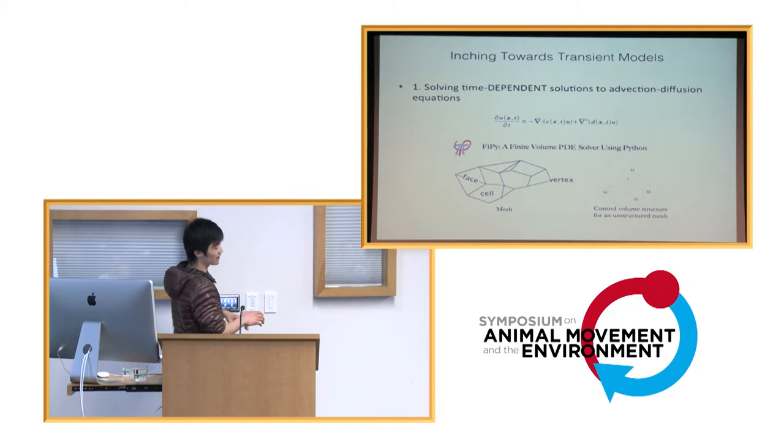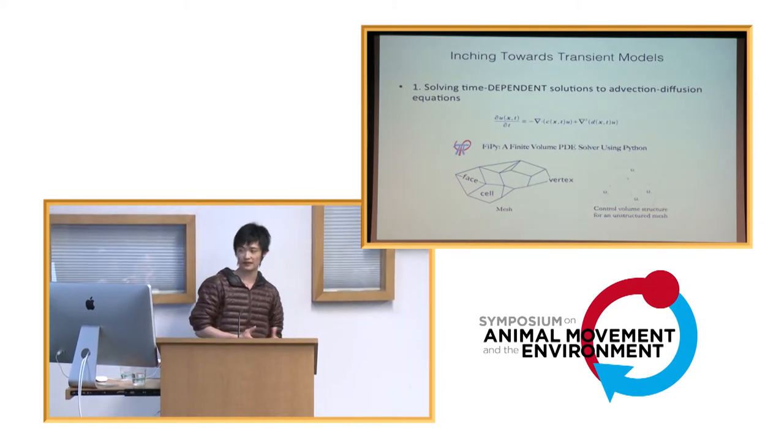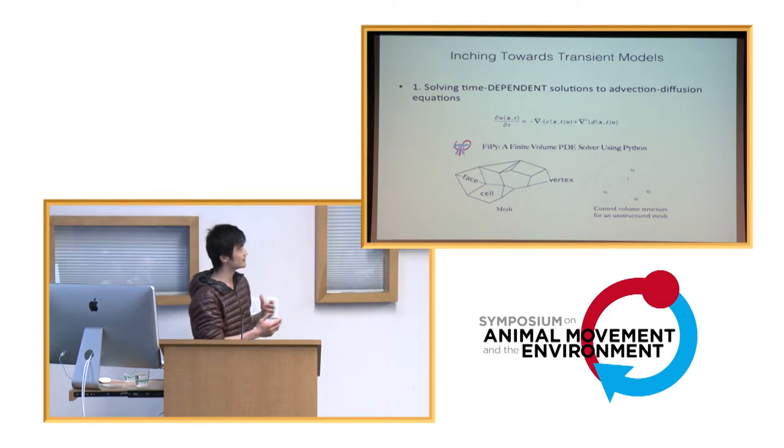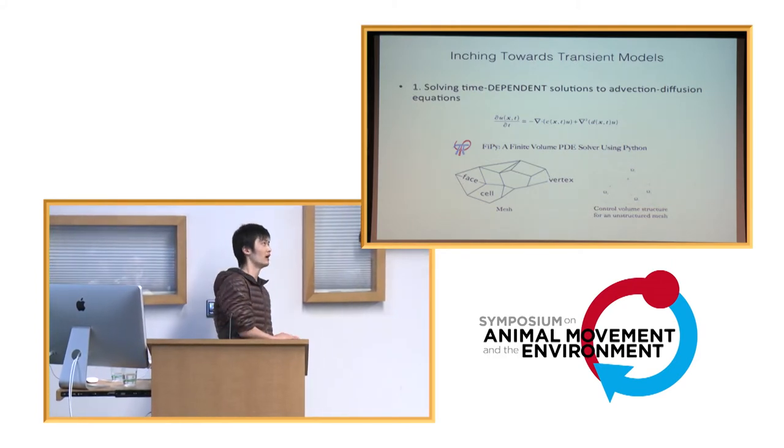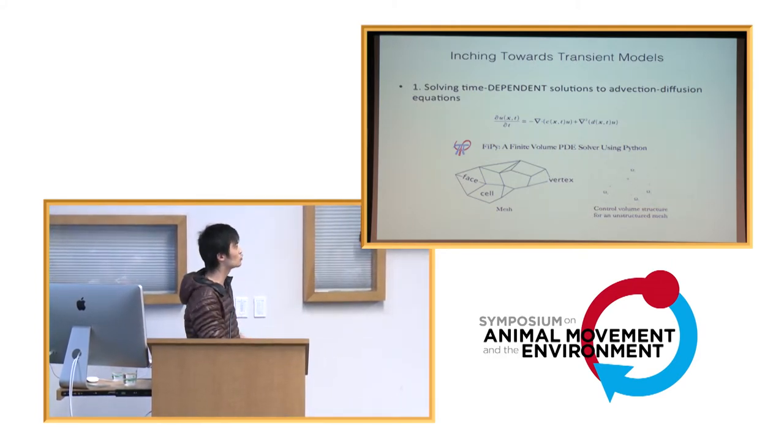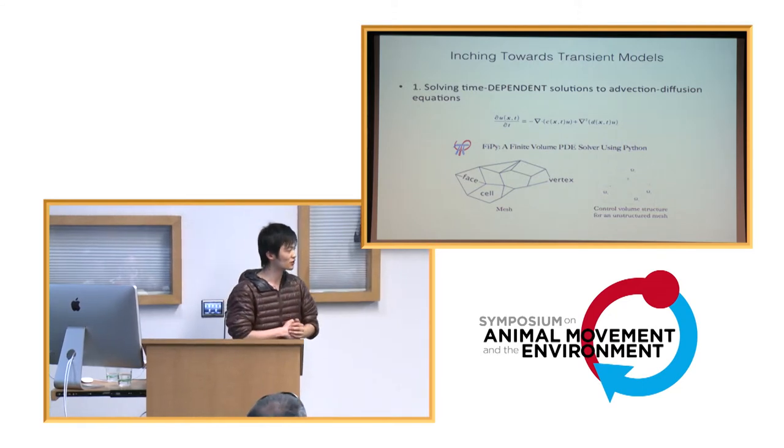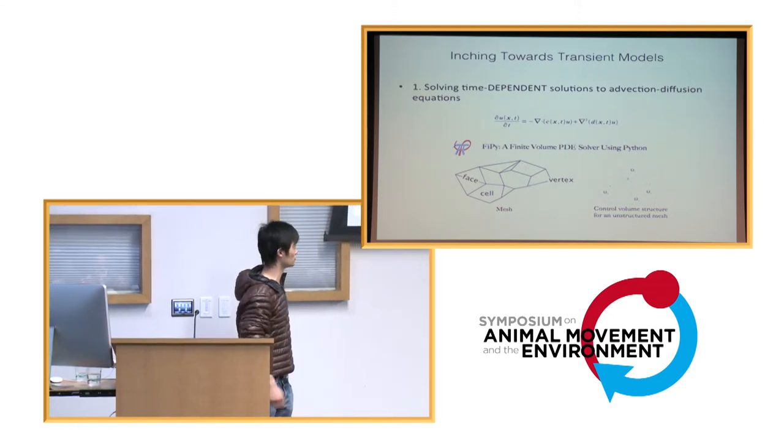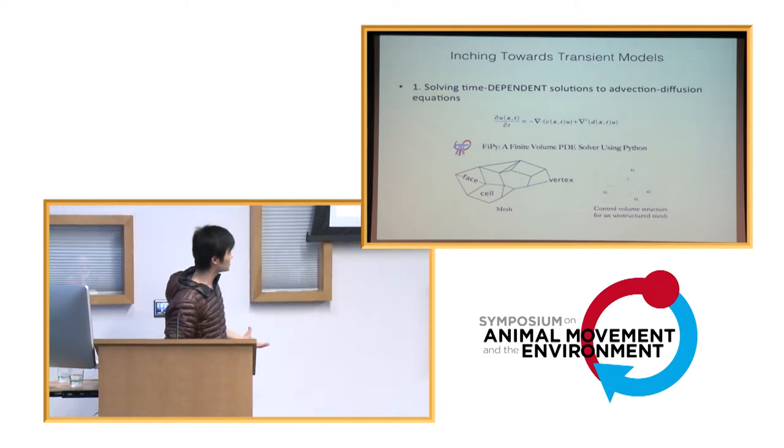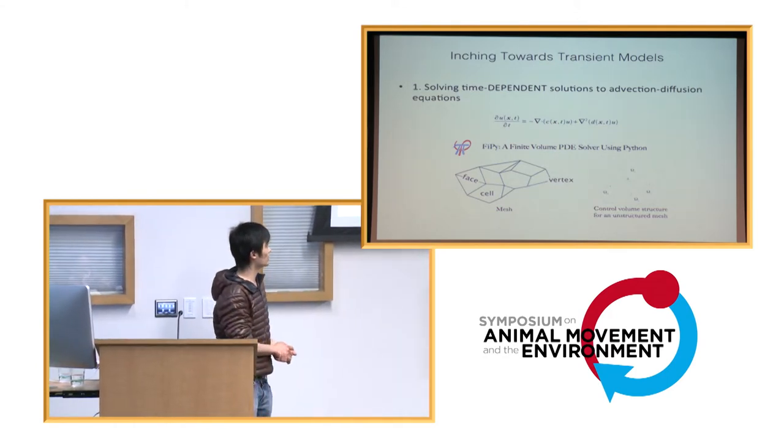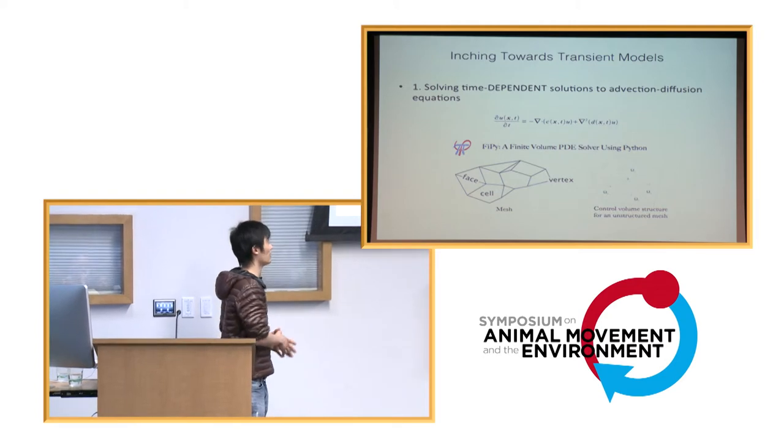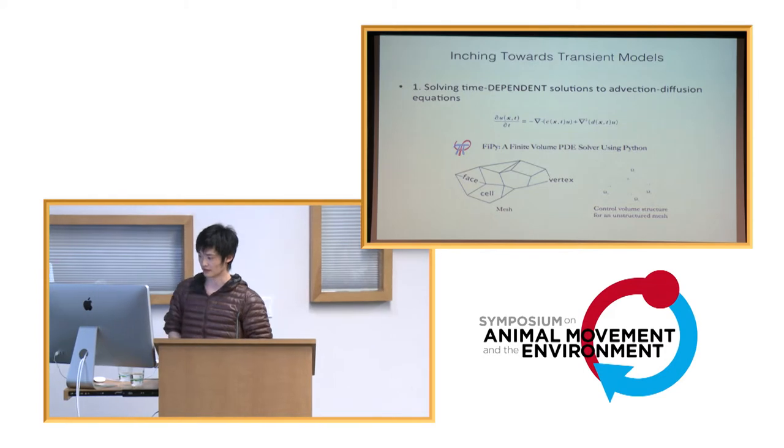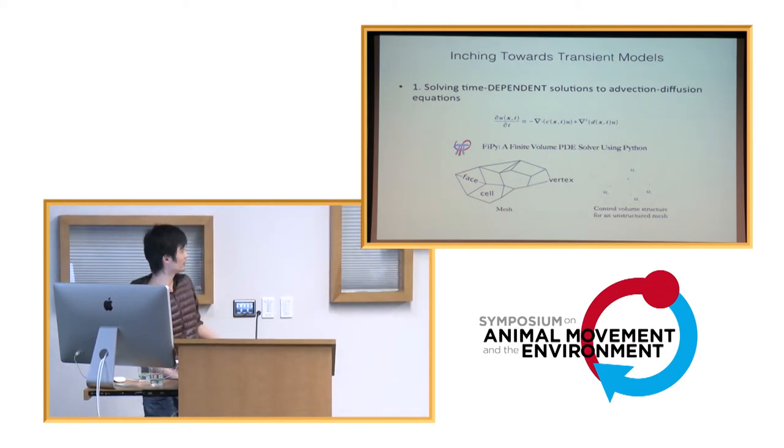So, we have just provided an analytical framework to look at home range transient. However, it's sort of just a quick fix to a much deeper issue, which is that we still cannot solve for this advection-diffusion equation. Until recently that is, when my collaborator and I have found a computational software based on finite-volume method using Python.